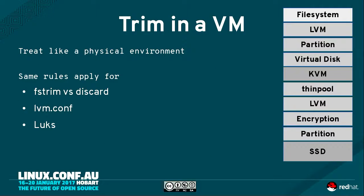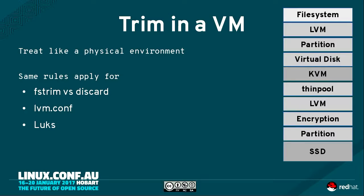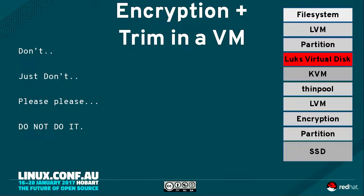Trim in a VM — again, everything we previously talked about applies, everything passes down. If you want it to behave nicely, apply FSTrim or discard settings within your VM. If it's got LVM, again edit your LVM.conf. And if you've got LUKS inside the VM, just don't — why are you wanting to encrypt twice? Occasionally for ad hoc environments there may be reasons, but where possible, just don't do it.